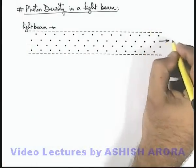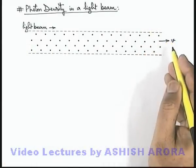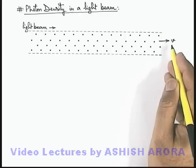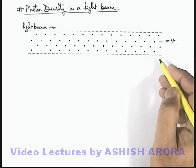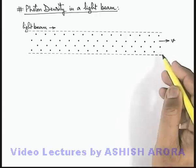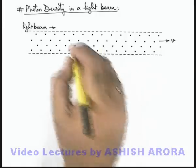Say we consider these are travelling at a speed v, and we know the value of v in free space is 3 into 10 to power 8 meters per second. In different media, the value of speed is less than speed of light in space.